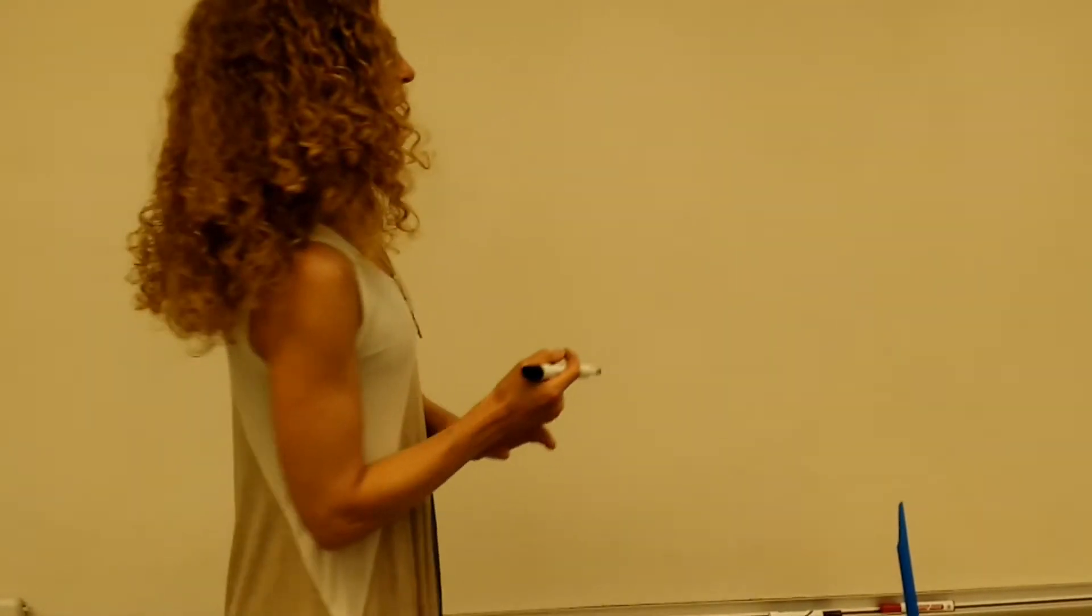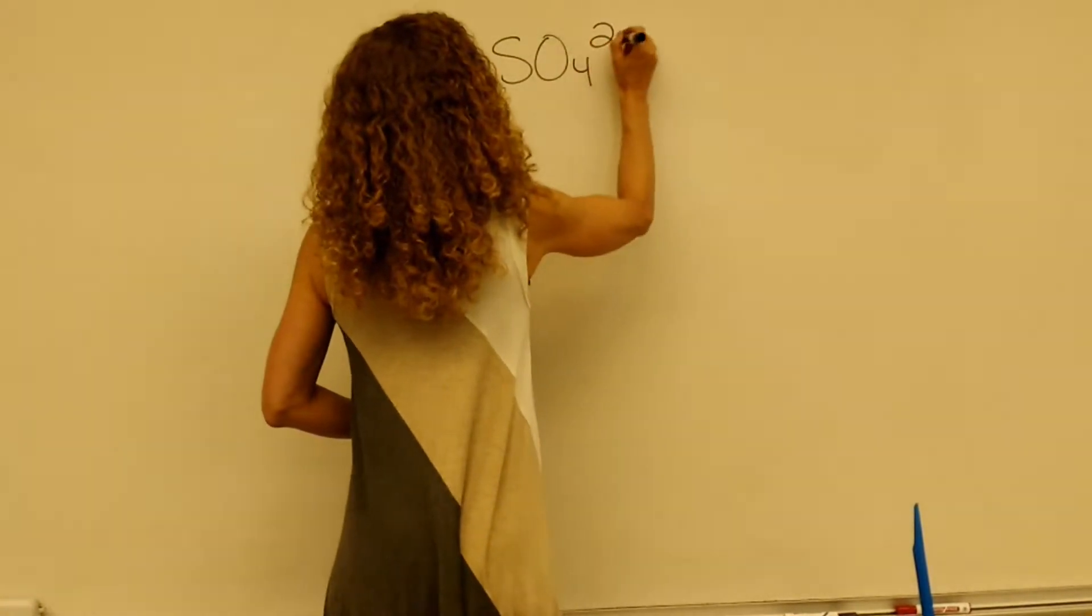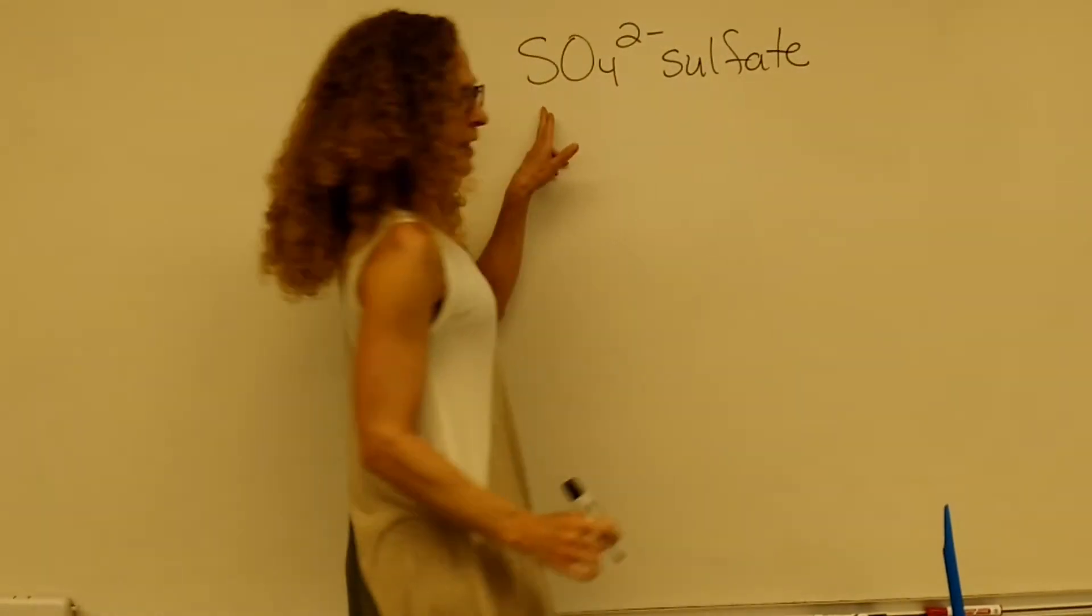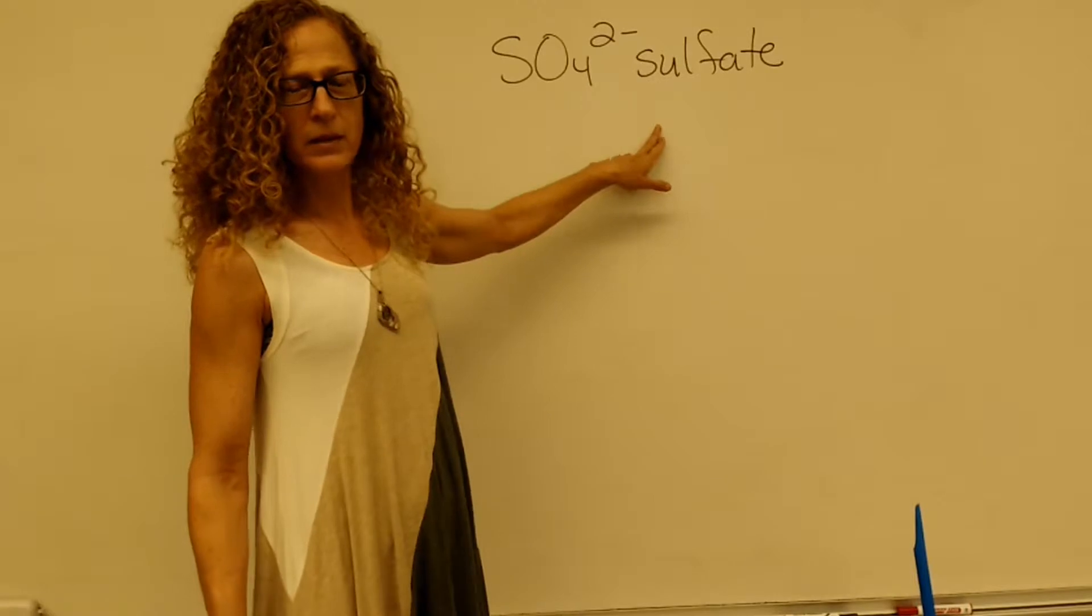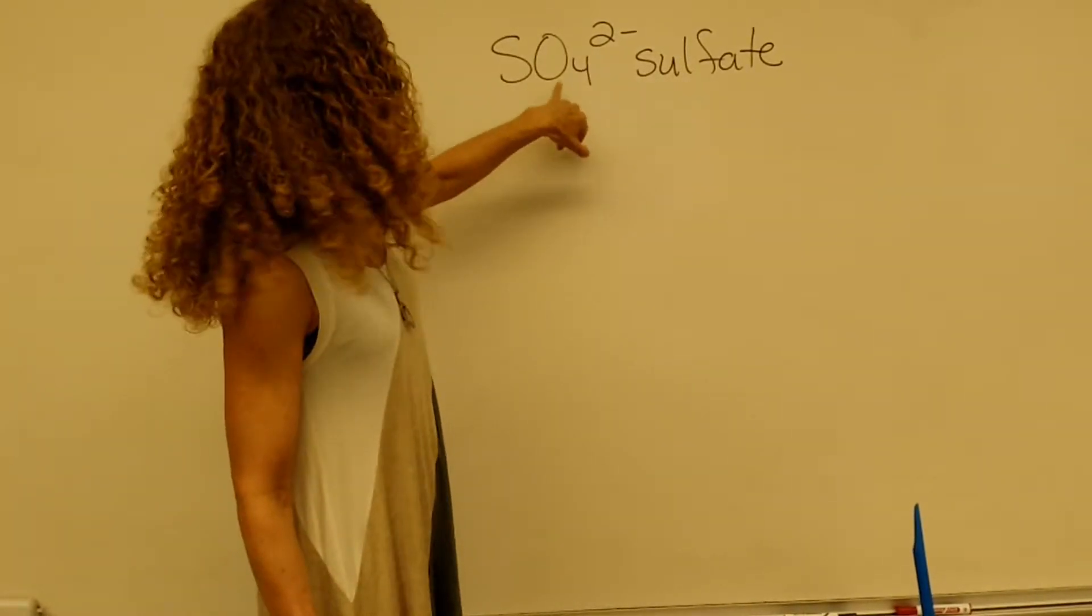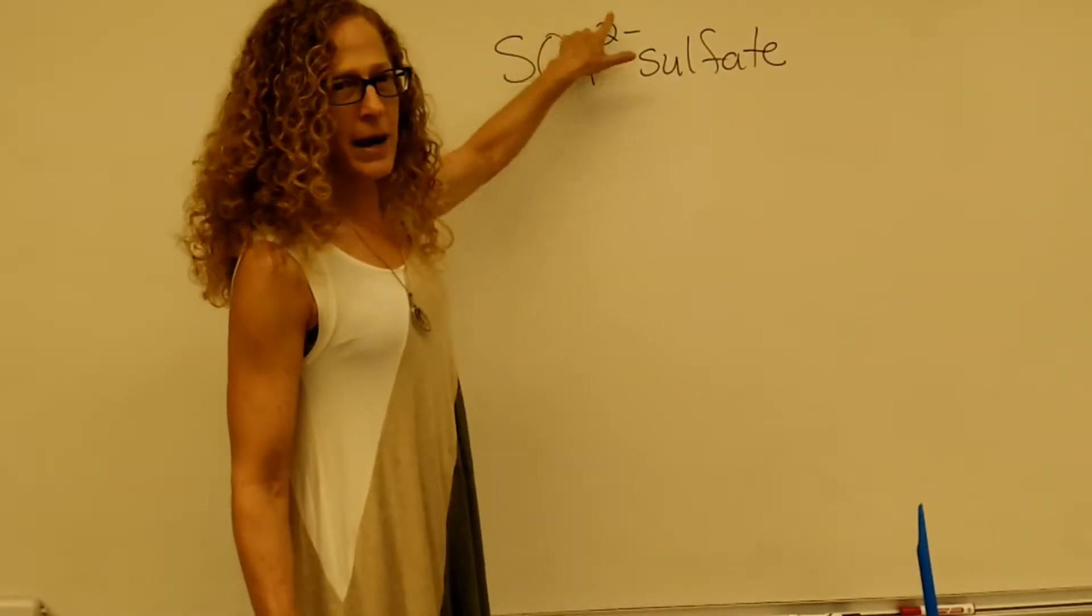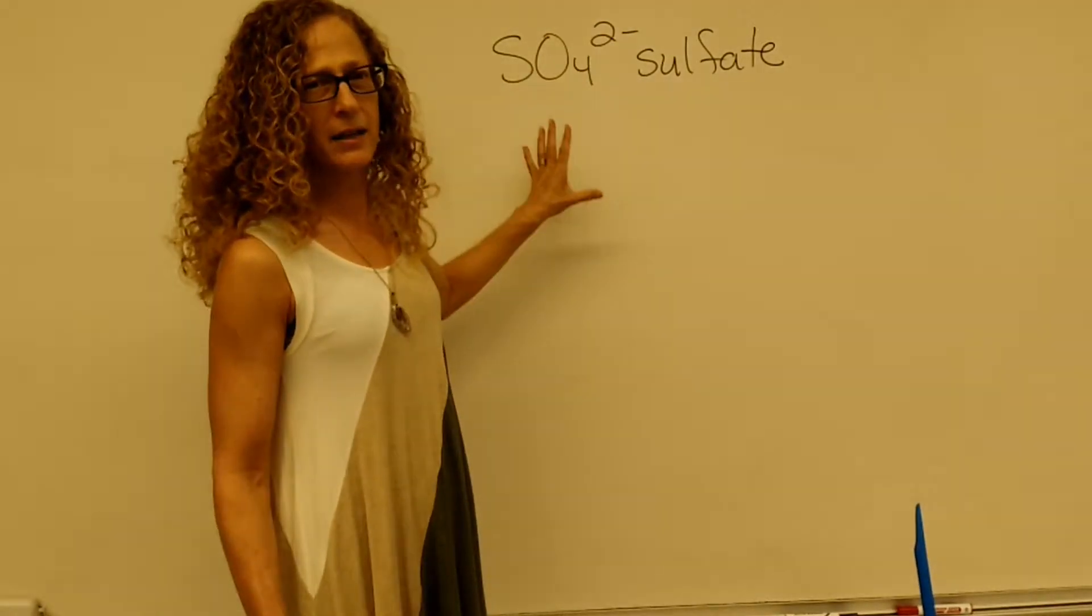So an example of a polyatomic ion would be SO4 2- which is sulfate. Now notice a few things. The S is a capital, the O is a capital, the 4 is a subscript, and the 2- is a superscript. It's important that you always write it exactly in that fashion.